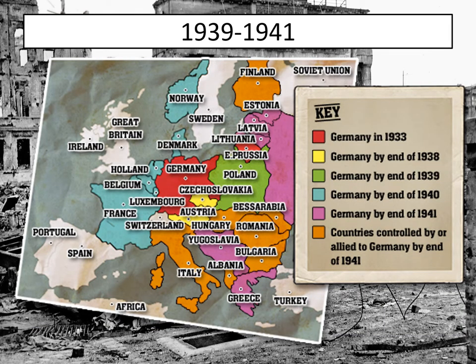We've now looked at preparations for war. For the rest of the lesson, we're going to focus on the impact of war on Germany itself. For the first couple of years, Germany was actually doing really well, as we can see from the map. Even before war started, Germany had expanded — Czechoslovakia and Austria were both taken over by 1938 or early 1939. Hitler then invaded Poland in September, expanding his territory further.